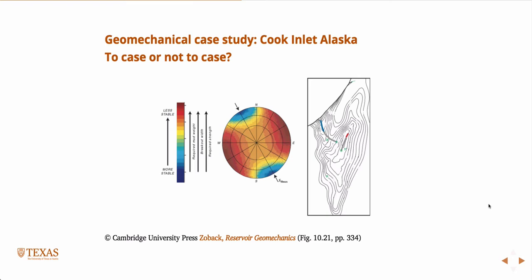The first thing to note is this lower hemisphere projection plot — like the one we made in class. The blue/cool areas are more stable regions and the red/warm areas are less stable in terms of wellbore breakout width and required mud weight; both increase as you go from cool to warm. The cardinal coordinates are shown, and the radial lines represent higher and higher well deviations going outward.